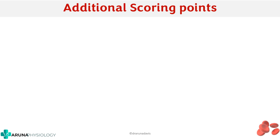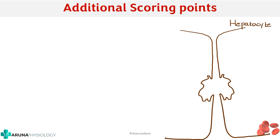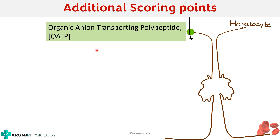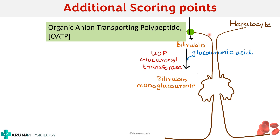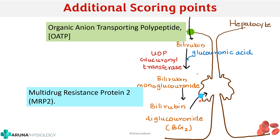For additional scoring points: the pump that transports the bilirubin-albumin complex into the hepatocyte is called organic anion transporting polypeptide, or OATP. After conjugation, the bilirubin diglucuronide is excreted into the bile canaliculi via a pump called multidrug resistant protein 2, or MRP2. Knowing these pumps is important because whenever there is an issue with them you can have different diseases causing jaundice.